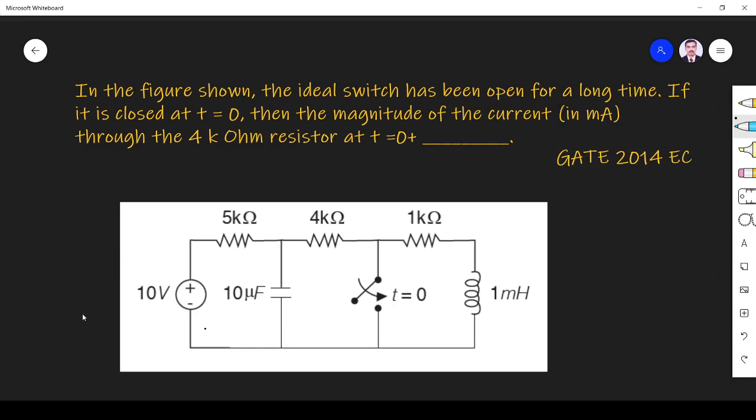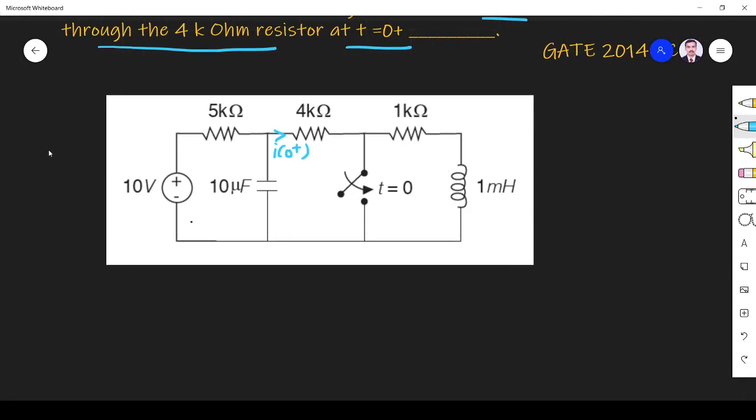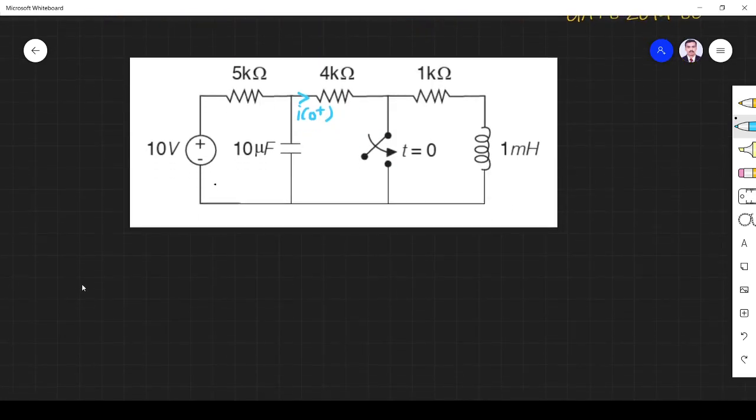equal to 0+ is what we need to find. So they are asking for the current through 4 kilo ohm at t = 0+. I have to find i through 4 kilo ohm at 0+. The switch has been open for a long time and it is closed at t = 0.